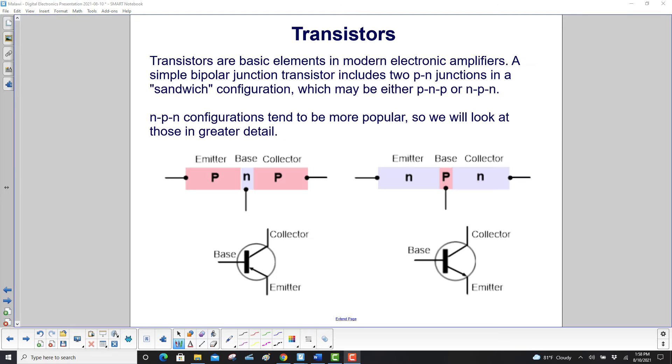Transistors are basic elements in modern electronic amplifiers. A simple bipolar junction transistor includes two PN junctions in a sandwich configuration, which may be either PNP or NPN. Here we have PNP, and here's NPN. NPN configurations tend to be more popular, so we'll look at those in greater detail.